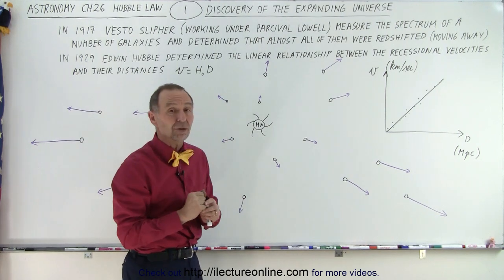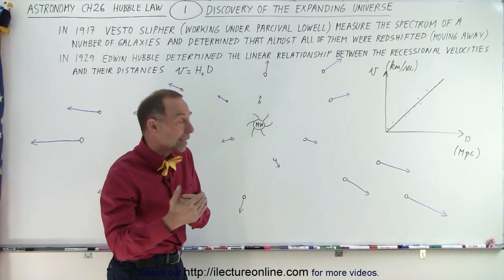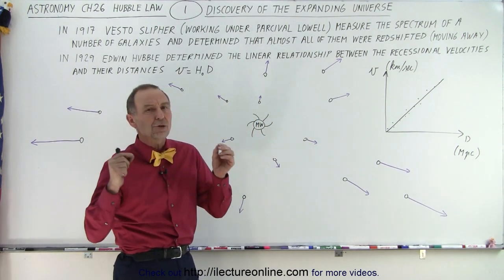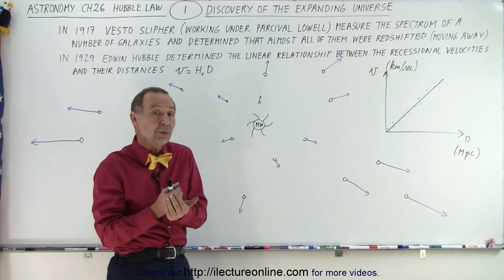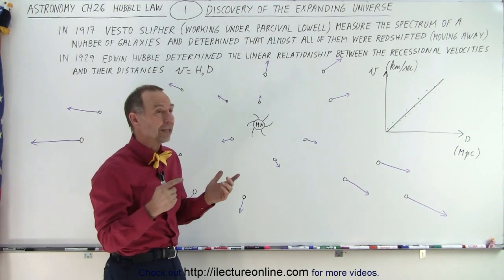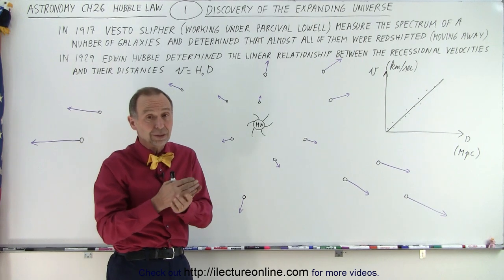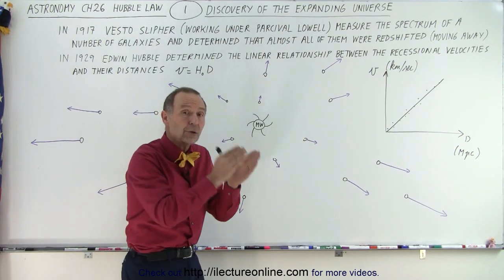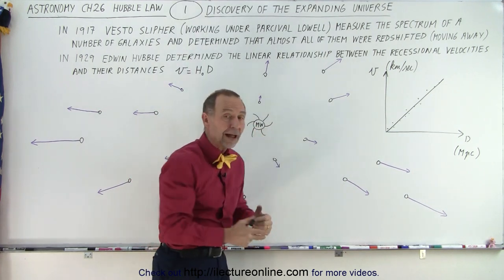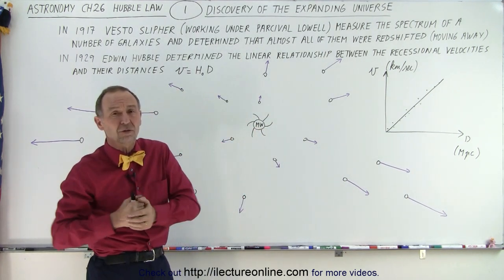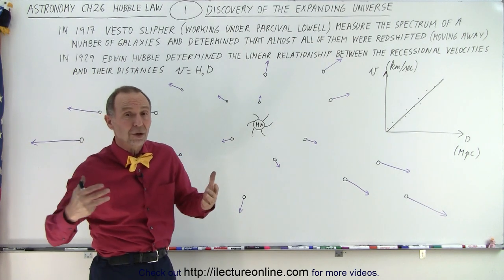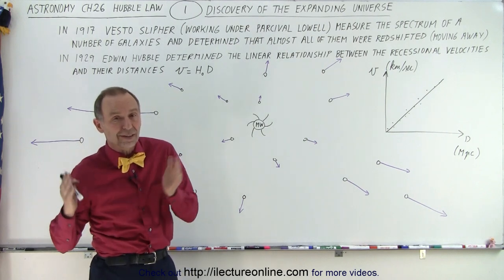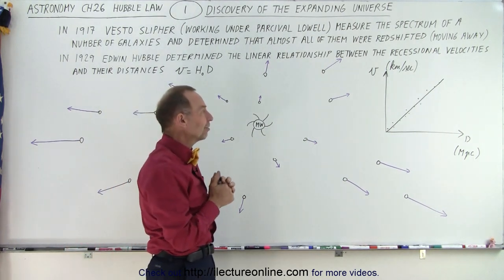And it's a linear relationship, which means if it's twice as far away, it moves twice as fast. Three times as far away, it moves three times as fast, which was an enormous discovery, because now we could turn the tables around and say, if I can figure out how fast it's moving, which is relatively easy to do, you measure the redshift, put it into an equation, out pops the velocity, then you plot it on the graph and determine the distance. So for every galaxy around us, we can easily figure out the velocity and then from that, easily figure out the distance. And that's what the Hubble Law did for us.